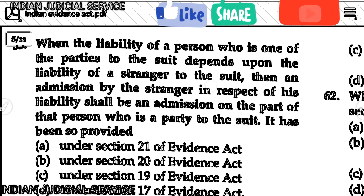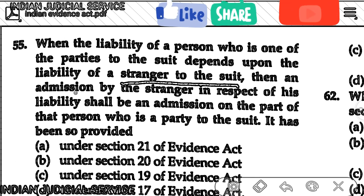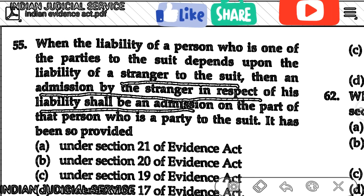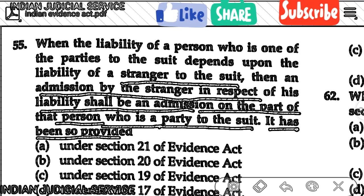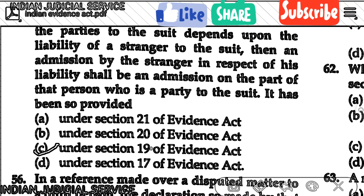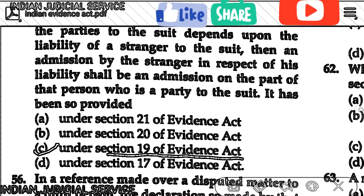Question number 55: When the liability of a person who is a party to a suit depends upon the liability to a stranger to that suit, the admission by the stranger in respect of his liability shall be an admission on the part of that party. Option C is correct — this is Section 19 of the Indian Evidence Act, which covers admission by a person whose position must be proved as against a party to the suit.